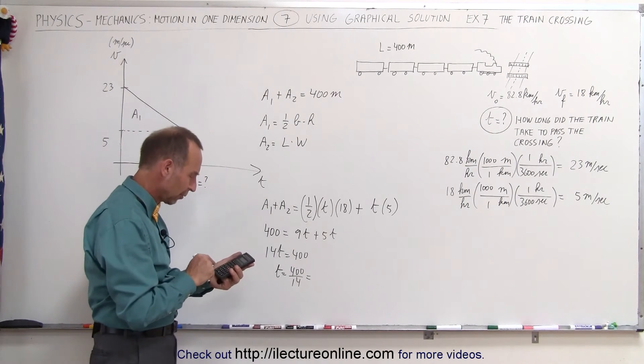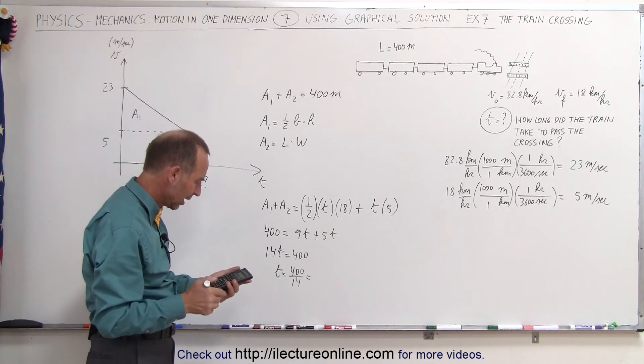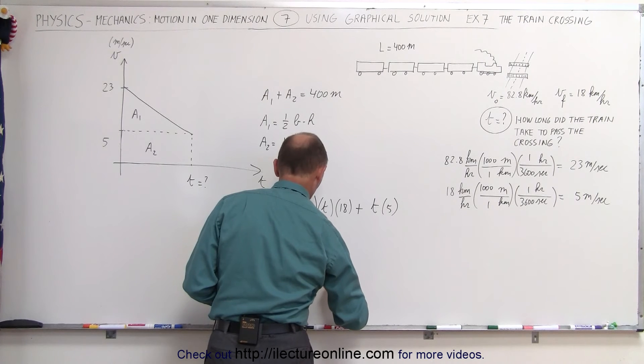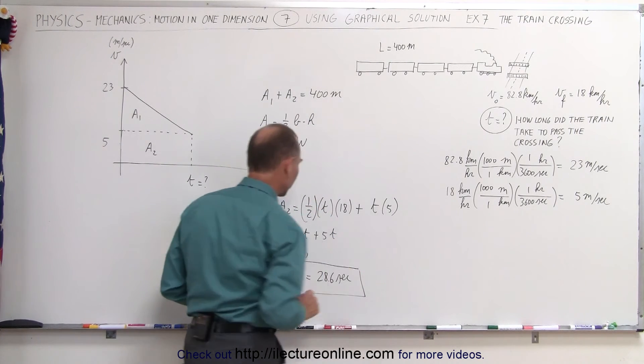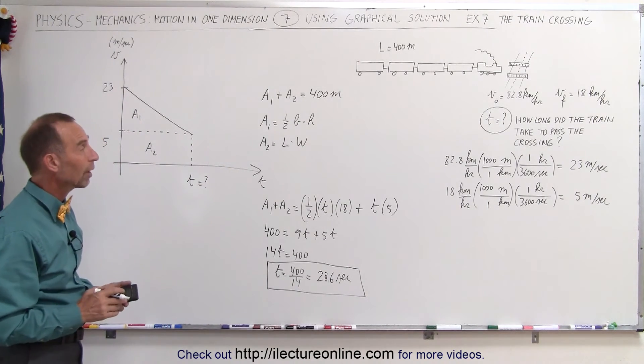Or t is equal to 400 divided by 14, and what would that be, 400 divided by 14, we get 28.6, that would be 28.6 seconds, so that would be the total time that the train takes to pass the railroad crossing.